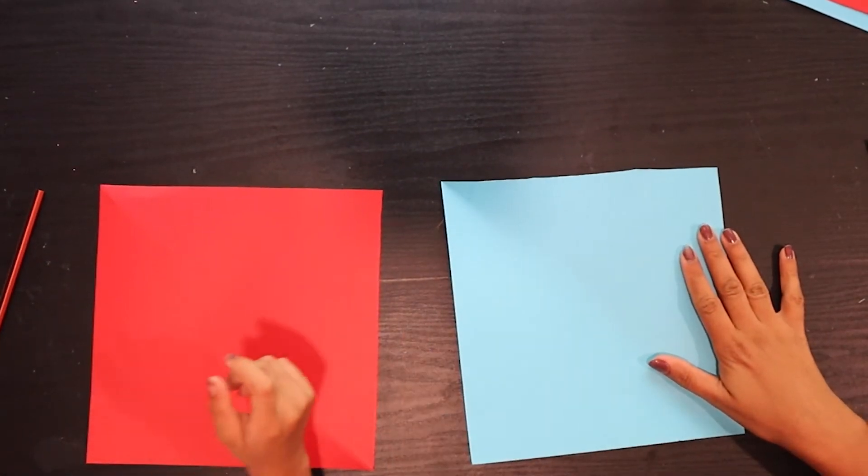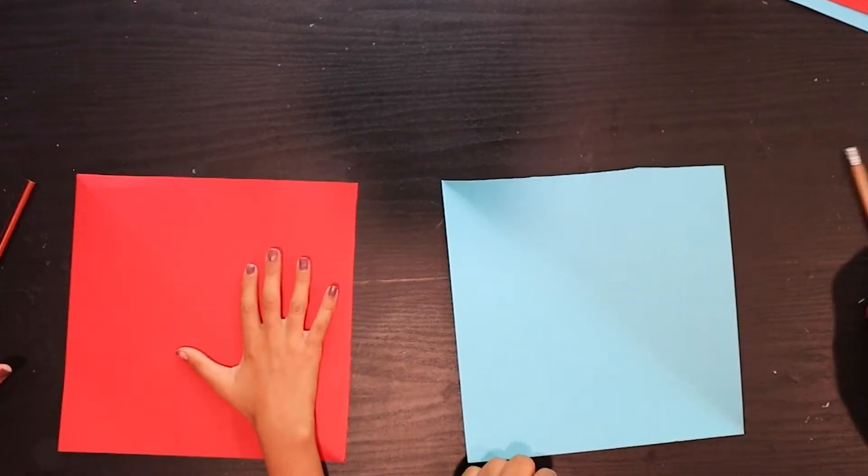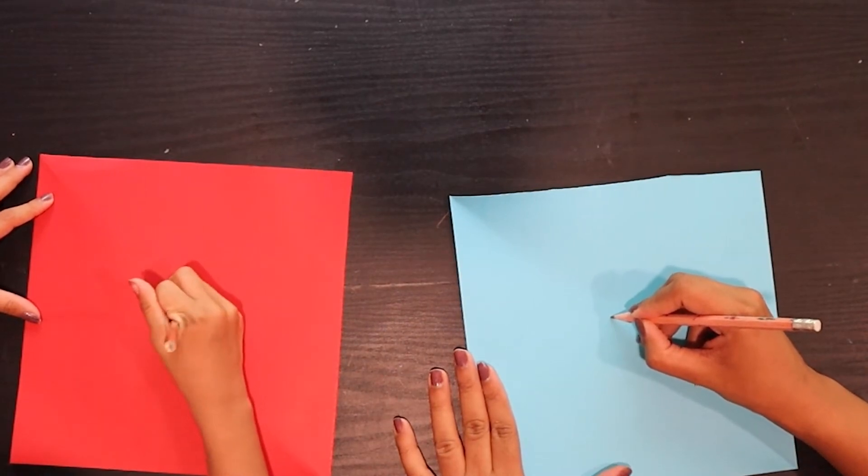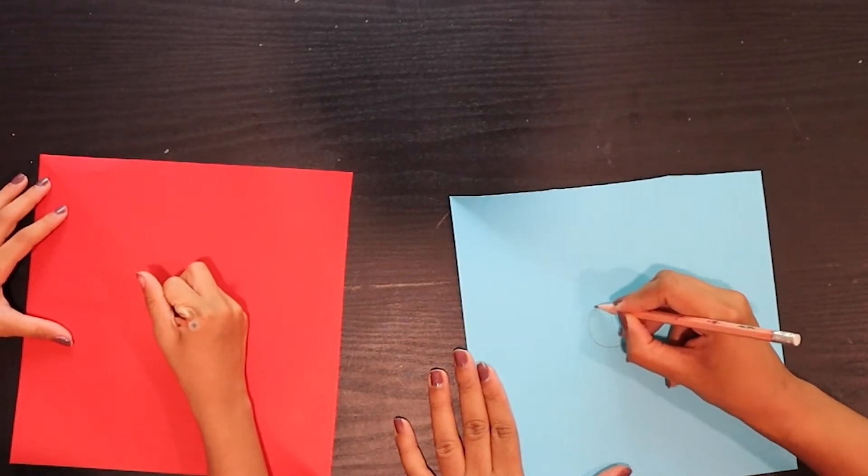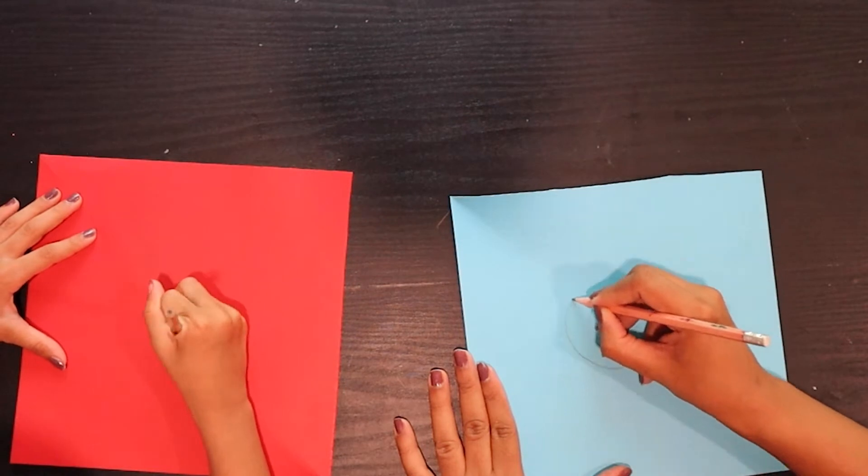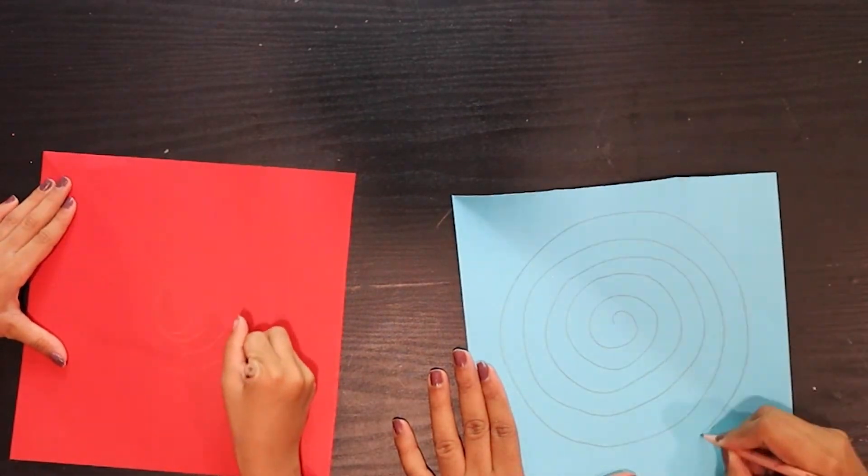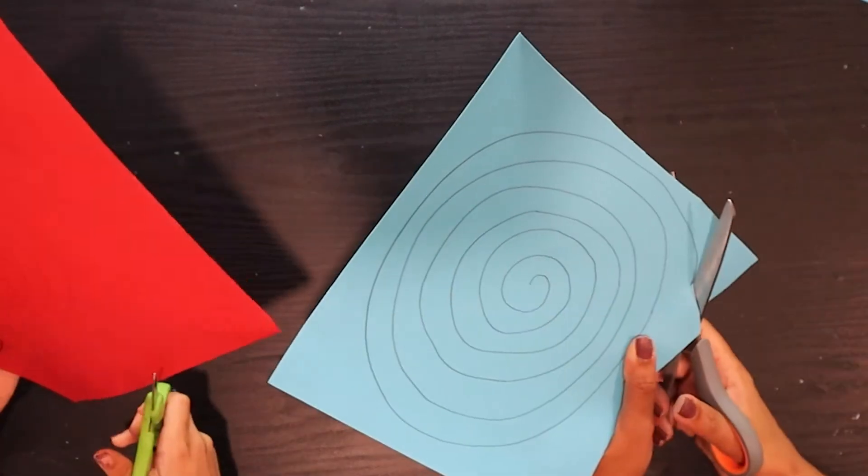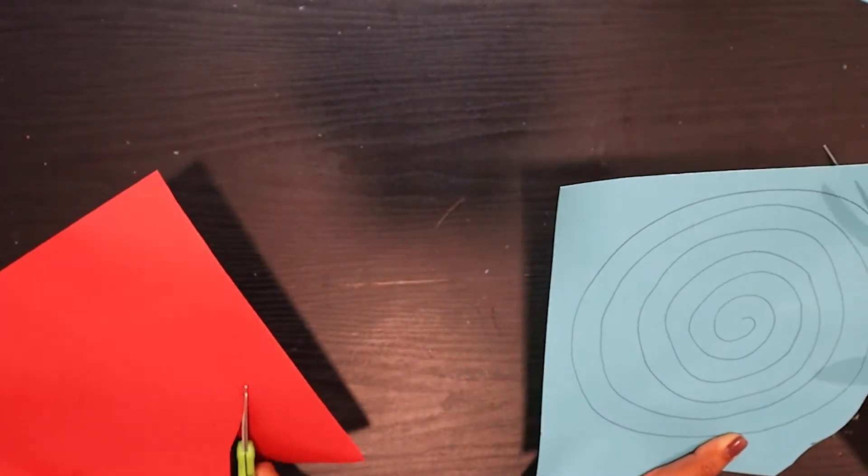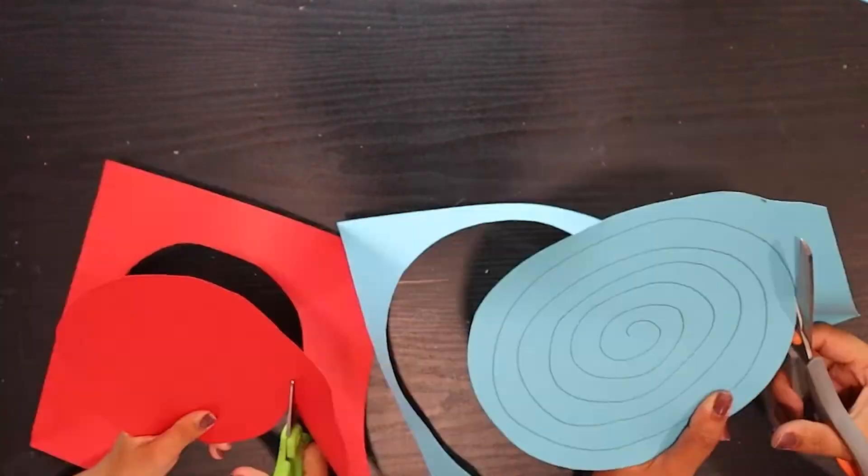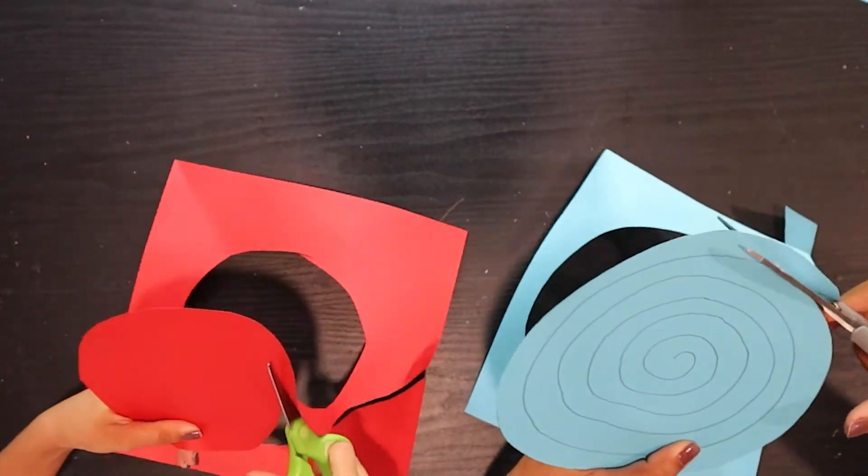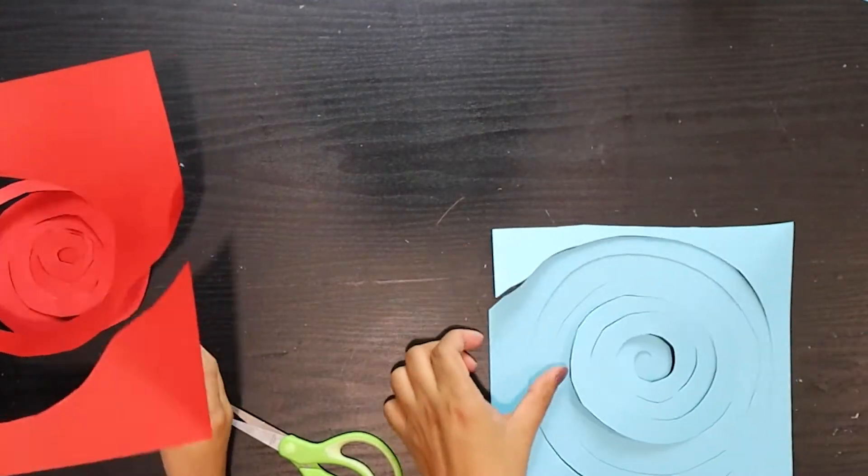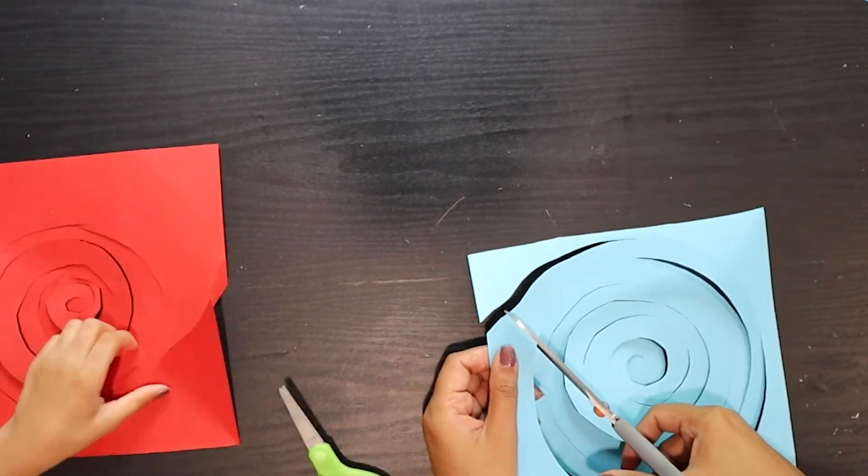So here we will take a square sheet and take a pencil and put your pencil between the sheet and start making a spiral like that. Ooh! And now take your scissors and start cutting the line. Now your spiral is ready. You just have to cut it from the end like this.